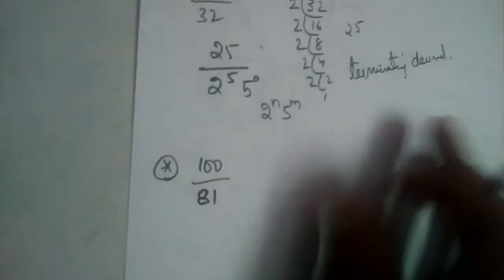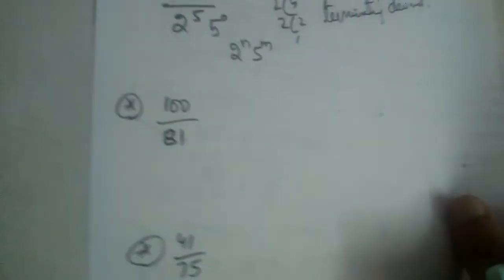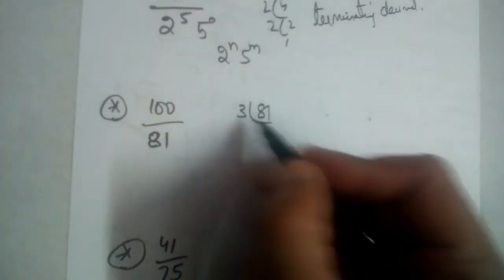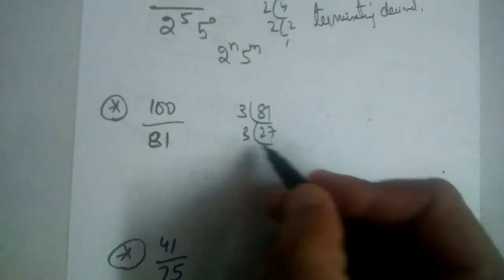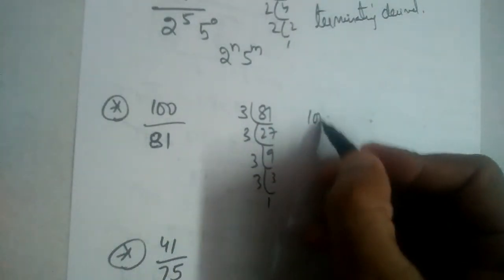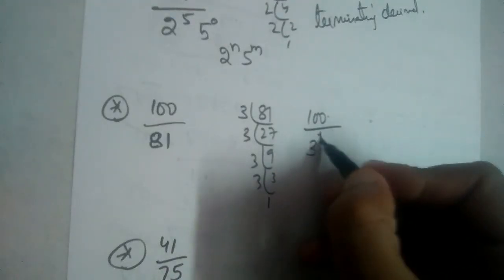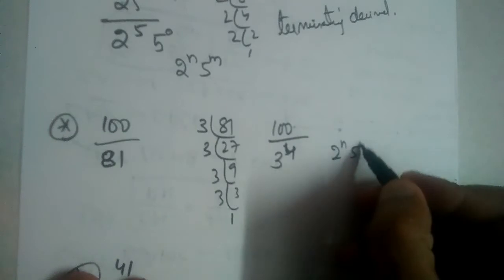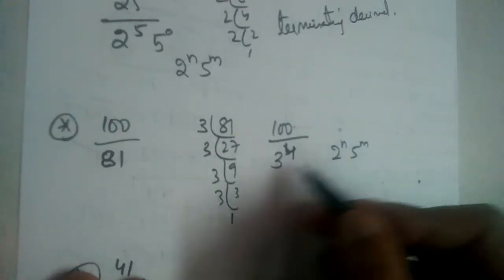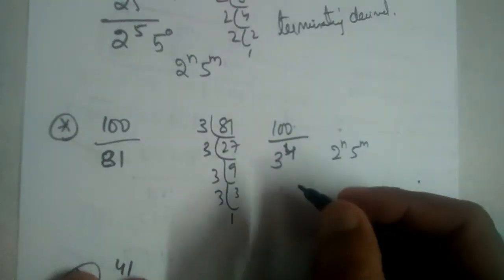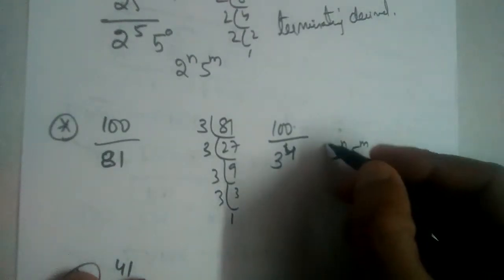Alright, now third one: 100 by 81. Let us find prime factors of 81. 3, 27, 3, 9, 3, 3, 3, 1. So we have 100 divided by 3 power 4. See, denominator is not in the form of this. There is no 2, there is no 5. That means is it terminating decimal? No.